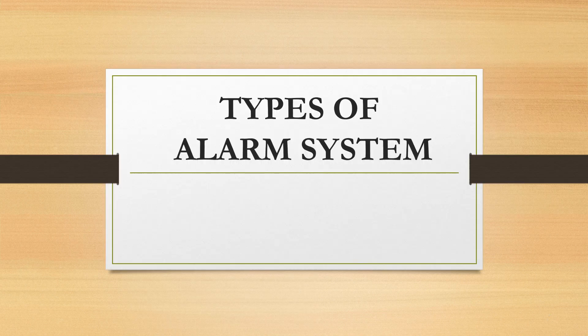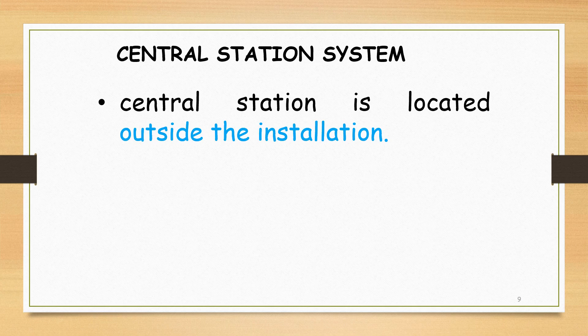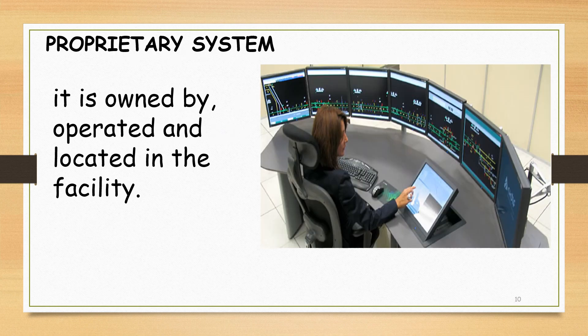Next topic: the types of protective alarm system. Central station system — a type of alarm where the control station is located outside the plant or installation. When the alarm is activated by the subscriber, the central station notifies the police and other public safety agencies.